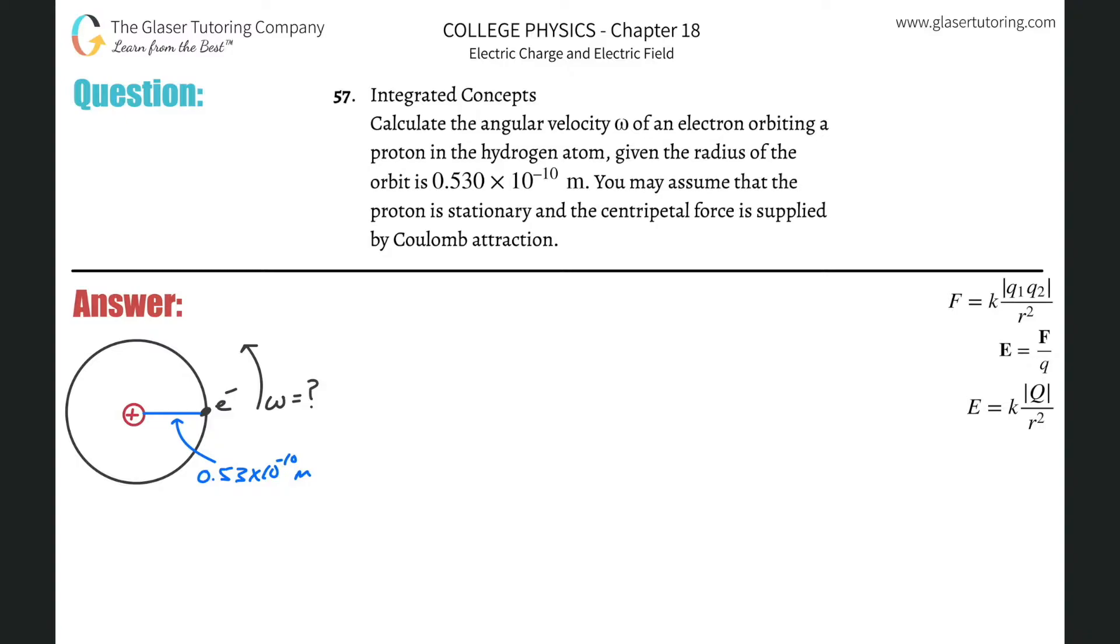Number 57, integrated concepts. Calculate the angular velocity omega of an electron orbiting a proton in the hydrogen atom, given the radius of the orbit is 0.53 times 10 to the minus 10 meters. You may assume that the proton is stationary and the centripetal force is supplied by Coulomb attraction.